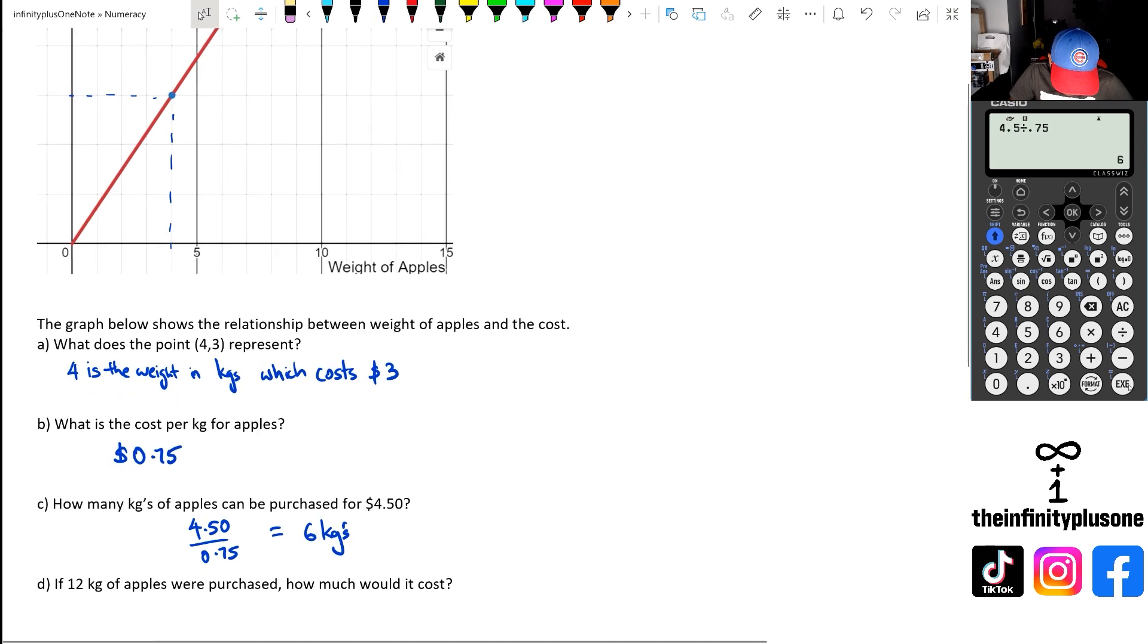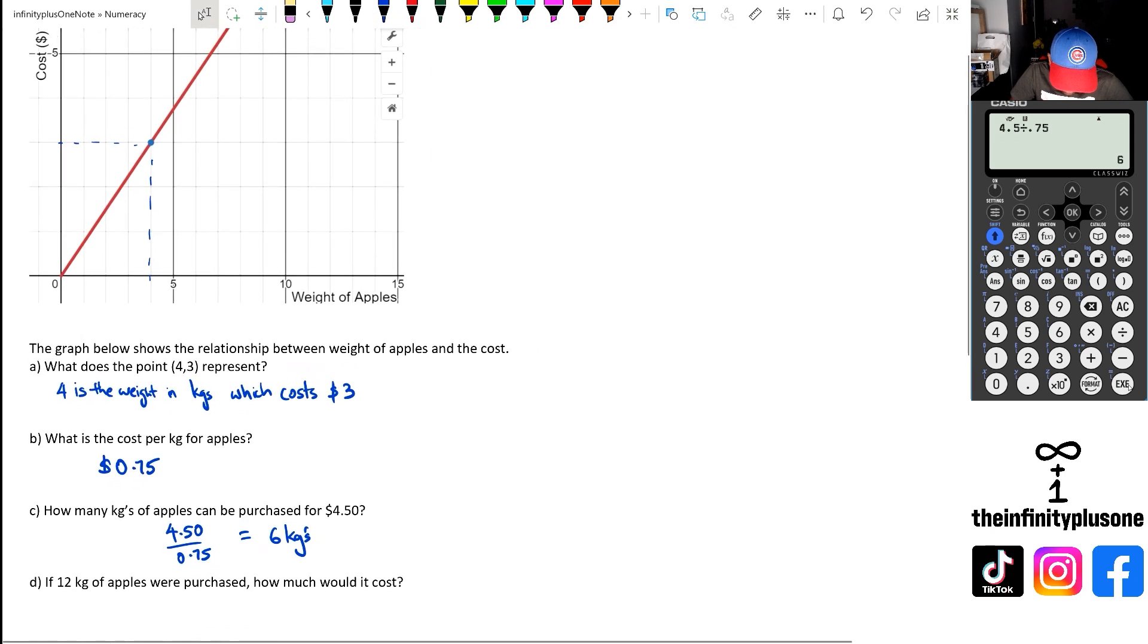And looking at question D, if 12 kgs of apples were purchased, how much would this cost? We know that it's 75 cents per kg, so we can just do 12 times 0.75. That's going to give us $9. So 12 kgs multiplied by 75 cents per kg means it's going to cost us $9.